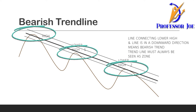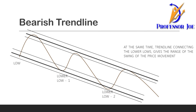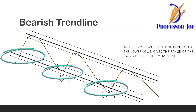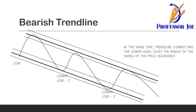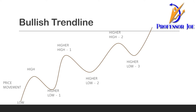You will never get a perfect trend line — it has to be in a zone. By connecting the lower lows you get an idea of the range of the swing: when there is a pullback, how much the price moves up, and when the run is happening, how much the price goes down. This is how a bearish trend line looks.